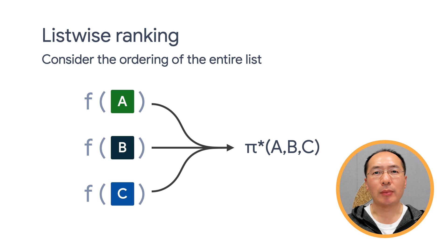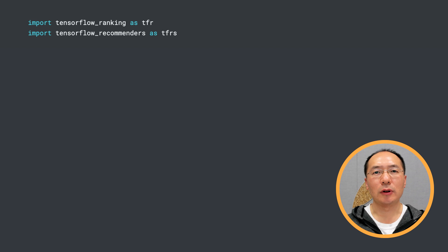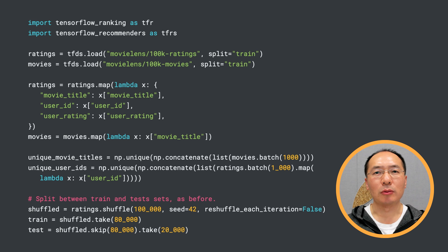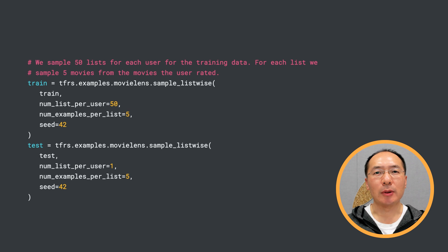So now you understand the basics of learning to rank. Let's go through some code to learn how to do this with TensorFlow Recommenders and TensorFlow Ranking. First, we import TF Recommenders and TF Ranking. Then, we prepare the MovieLens dataset as in our previous basic ranking example. To perform Listwise optimization, we need access to a list of movies each user has rated. But each example in the MovieLens 100k dataset contains only the rating of a single movie. To get around this, we transform the dataset so that each example contains a user ID and a list of movies rated by that user.